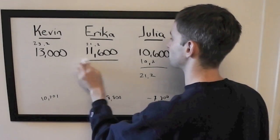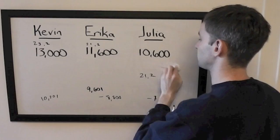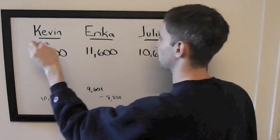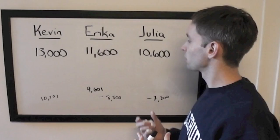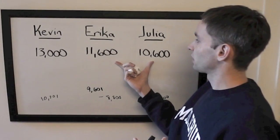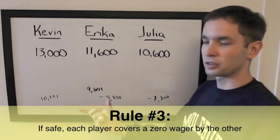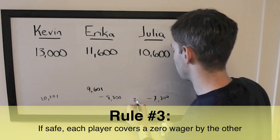Now it's a tight game, so third place is the only one who can take advantage of a Rule 3 wager. Julia trails Erica by $1,000 and Kevin by $2,400, so she should wager at least $2,401.